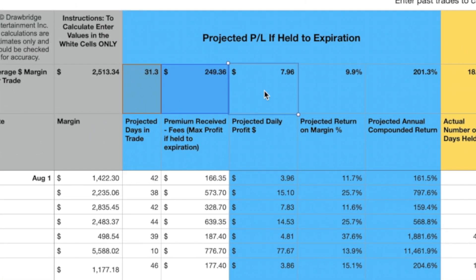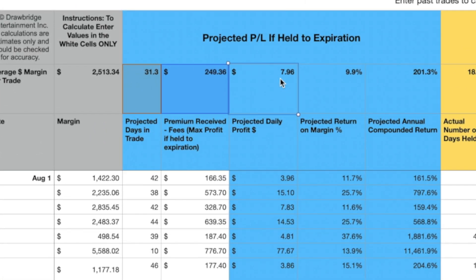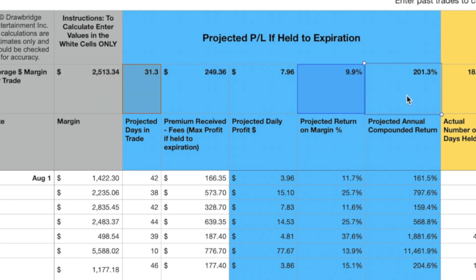The projected daily P&L according to this chart is $7.96, which means every 31 days we'll be making approximately a 9.9% return. And compounding, the return on margin is 200%. Nobody ever uses their full margin in an account — typically people trade only up to like 50% margin. So you can see that even in a 100% win rate scenario, your return on margin in an extremely good environment is going to be about 100% return annually, which is massive.